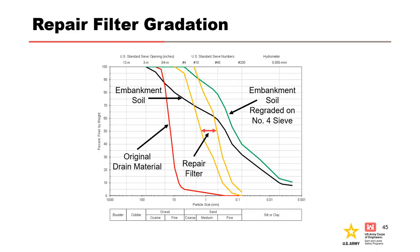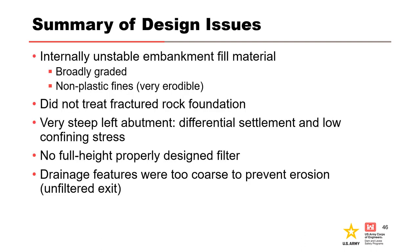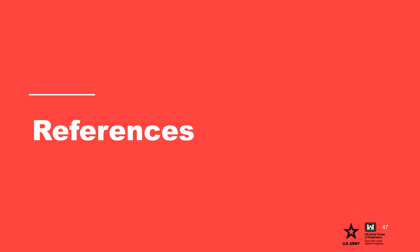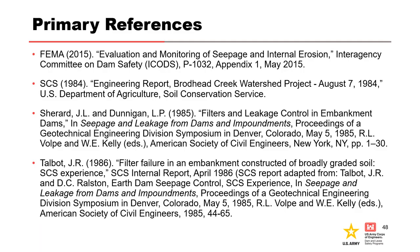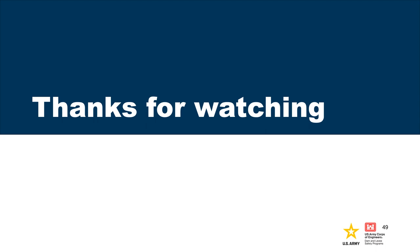The result of SCS studies on filters and experiences using broadly graded soil caused the filter design criteria to be modified as recommended in Sherrard and Dunnigan 1985. To summarize the design issues at Broadhead Dam: the dam had broadly graded internally unstable embankment soils with non-plastic fines; the fractured rock foundation was not properly treated; the steep left abutment slope was not properly excavated and graded; there was no full-height chimney filter in the embankment; and the drains were not properly designed and were too coarse to prevent erosion. This concludes the internal instability case study for Broadhead Dam.